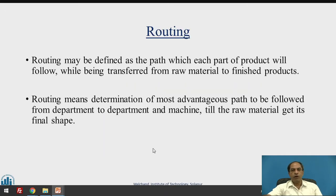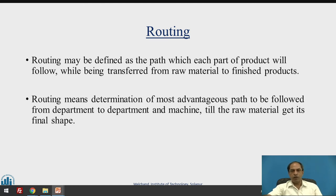What is routing? Production planning and control is an important function in the entire organization. It deals with three stages: pre-planning, planning, and control. We need to do some work before we plan — that is generally called the pre-planning stage. Then the actual planning of the entire production or service management system. And at the end, we have controlling, which means checking progress whether things are happening as per plan, and if not, what corrective actions are required.